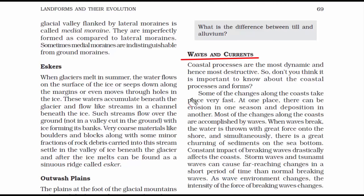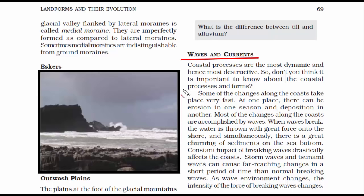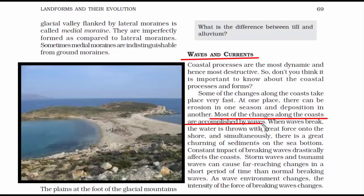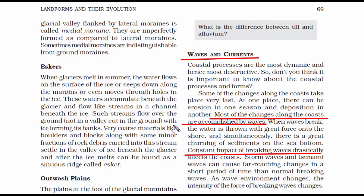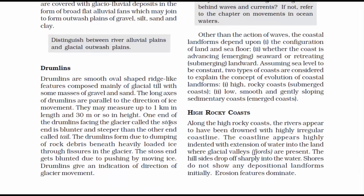Now we will read about waves and currents, which are also exogenic forces responsible for erosion and deposition of landforms. When we hear the words waves and currents, immediately sea and ocean come to mind, and where do these waves and currents hit? Coastal areas. That's why land formation at coastal areas is the most dynamic and destructive. Erosion and deposition is so fast at coastal places because of constant arrival of waves. To understand coastal landforms, we need to understand two types of coastline: one is low, smooth and gently sloping sedimentary coast, also known as emergent coastline, and the second is high rocky coast, also known as submerged coastline.